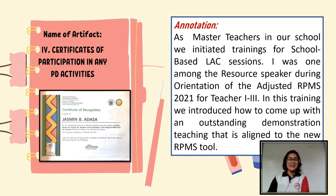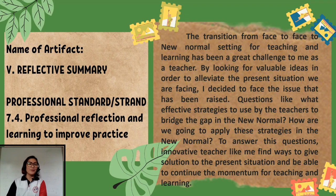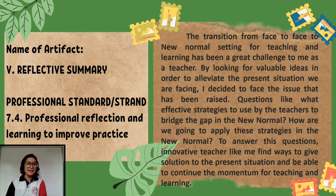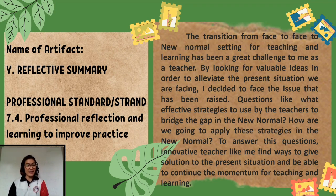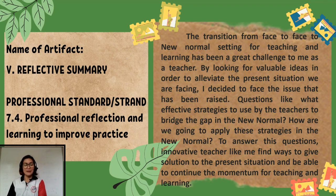The fifth artifact is the Reflective Summary. The professional standard or strand under this artifact is professional reflection and learning to improve practice. You can put your learnings during this time of pandemic — what we are doing to alleviate the problems we experience and to maintain the momentum of our teaching-learning process. I have my reflective summary here that explains all my experiences in improving our learning practice.